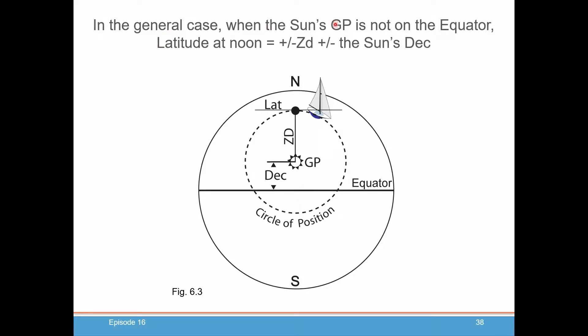So in the general case, when the sun's GP is not on the equator, your latitude calculation that you get at noon will be either plus or minus the zenith distance, plus or minus the sun's declination. Now let's go take a look at what those formulas are.